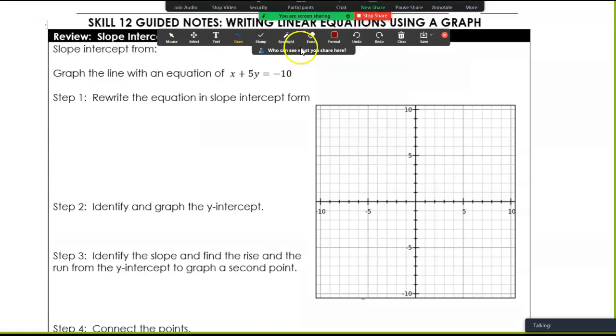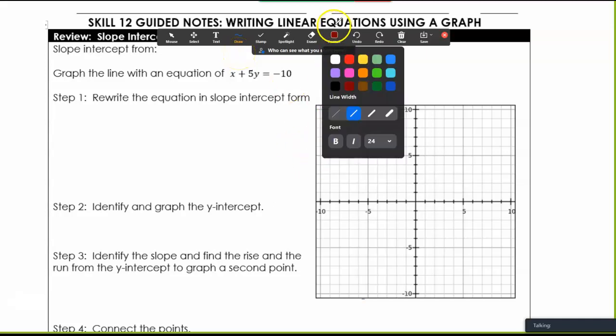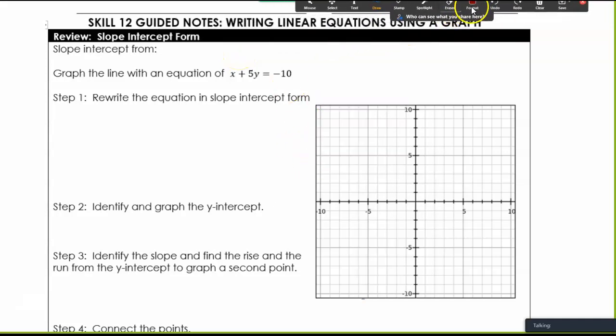Hi, this is Miss Claywell with skill 12, writing linear equations using a graph. So you want to find your skill 12 notes. We're going to start with slope intercept form. Slope intercept form is y equals mx plus b, where m is slope and b is our y-intercept.